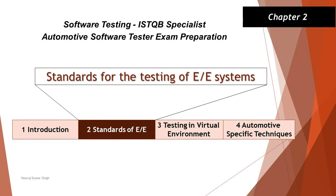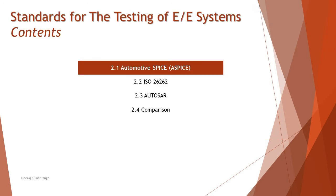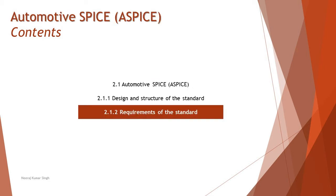Hello friends and greetings for the day. Welcome back to another tutorial on ISTQB Specialist Automotive Software Tester. We are in Chapter 2, continuing with topic 2.1 Automotive SPICE, specifically sub-segment 2.1.2 on requirements of the standard. This is the second tutorial in the series, as there is a lot of content to cover under ASPICE standards.